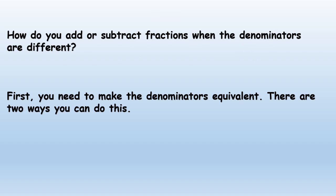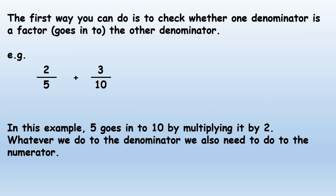How do you add or subtract fractions when the denominators are different? First, you need to make the denominators equivalent. There are two ways you can do this. The first way is to check whether one denominator is a factor or goes into the other denominator.